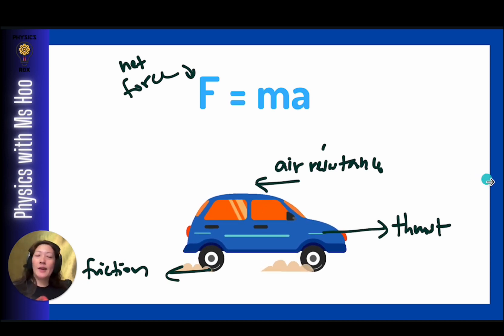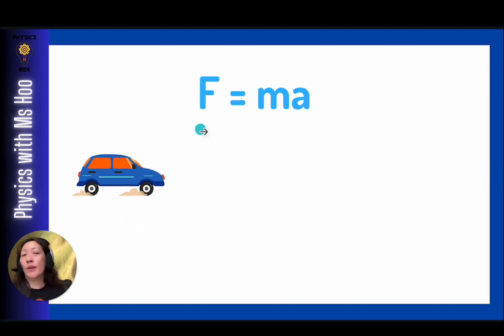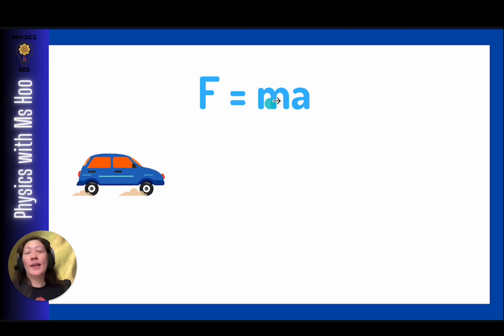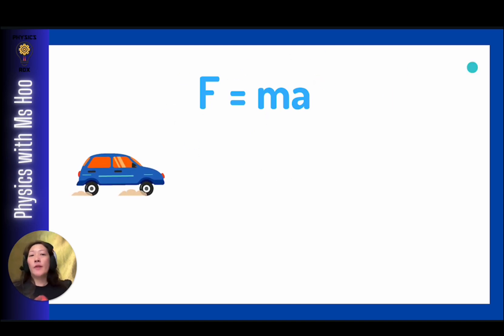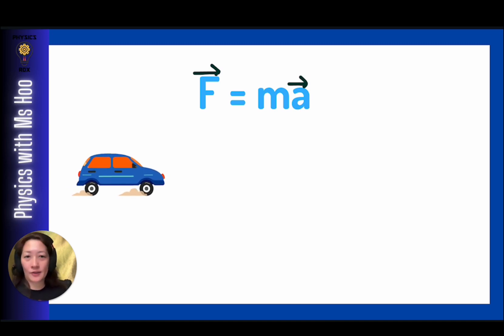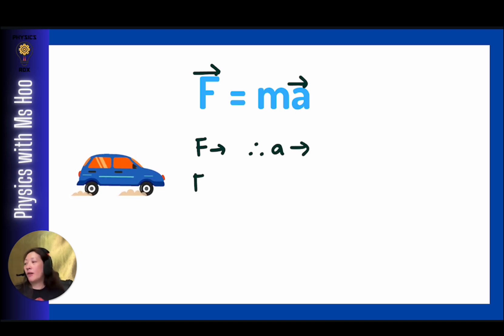To understand the relationship more clearly, the net force equals the product of mass and acceleration. For the same object, mass is constant, so we compare net force against acceleration. Both force and acceleration are vectors. So if the net force is to the right, acceleration is to the right. If the net force is to the left, the acceleration is to the left.